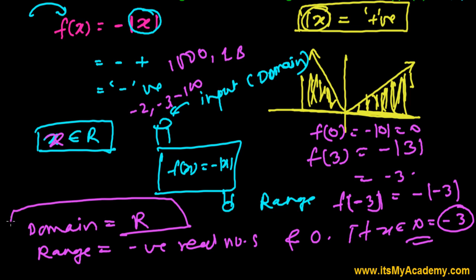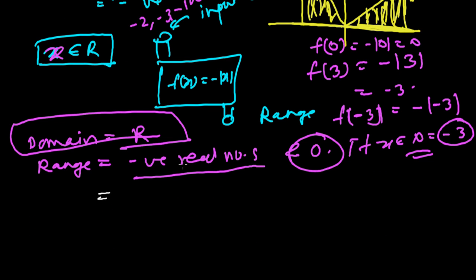So simply I want to say, the domain is all real numbers, and the range is negative real numbers, and maybe possible 0 if x is 0. Better you can write this range, negative real numbers and 0 as, negative real numbers, the end point is like, let's say, negative infinity, and from there to till 0.